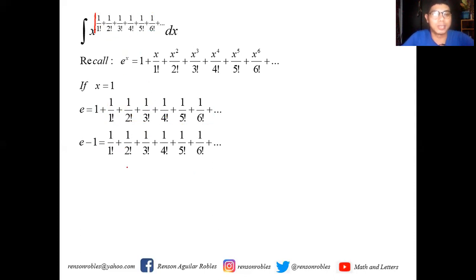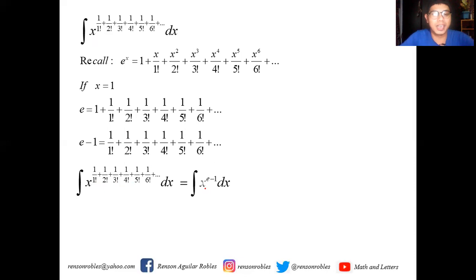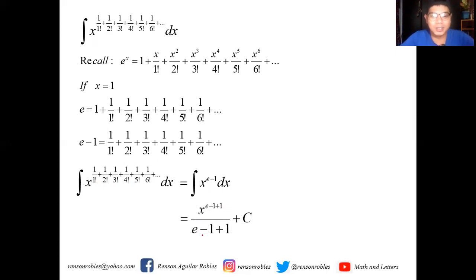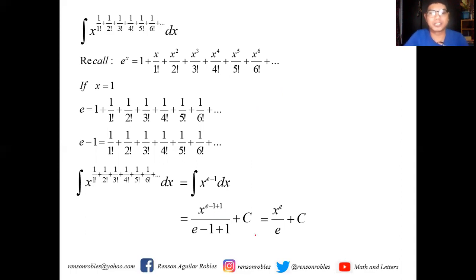So we can now simply rewrite the integral as the integral of x raised to e minus 1, dx. By applying the integral power rule, we get x raised to e minus 1 plus 1, all over e minus 1 plus 1, plus c — or simply x raised to e over e plus c. So the integral of the given expression is equal to x raised to e over e plus c.